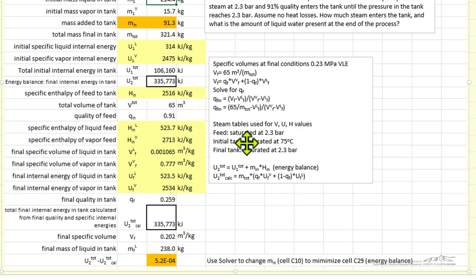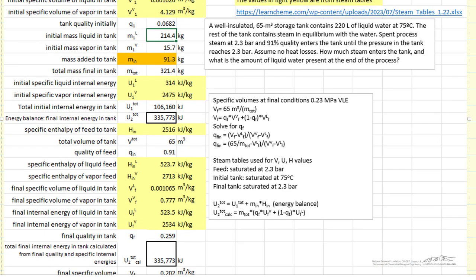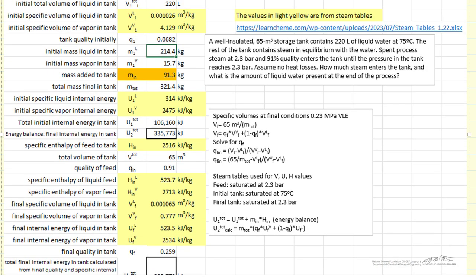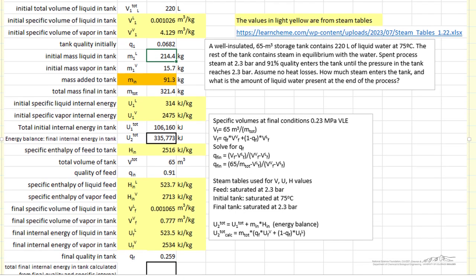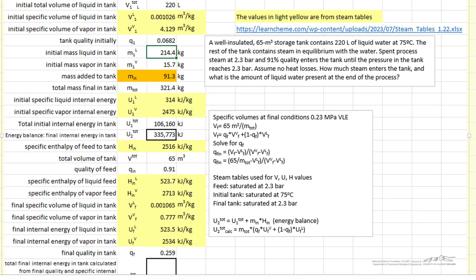So you can look at the spreadsheet to show more details. The equations are written here on the right. And we're able to determine by adding steam, solving this unsteady state energy balance, and using the fact that the specific volume cannot change to determine the two unknowns, the mass and that quality.